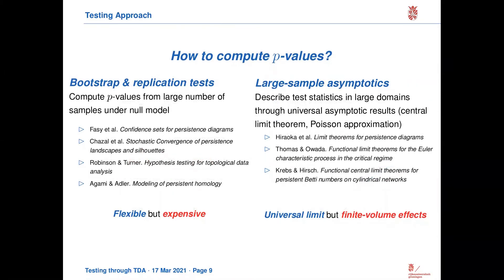Once we have our test statistic, how do we compute the p-values? Again, two kinds of choices. First of all, there are bootstrap and replication tests, where roughly speaking, we compute specific p-values by taking a large number of simulations or bootstrap samples under the null model. These approaches are very flexible because you can really specify the null model and just take samples or simulate, but if you work on large scales it can be very expensive. There's some refinement where you model exactly the persistence diagram and not the data behind it, which is a bit less expensive computationally, but you need to invest a certain amount in getting into the theory.